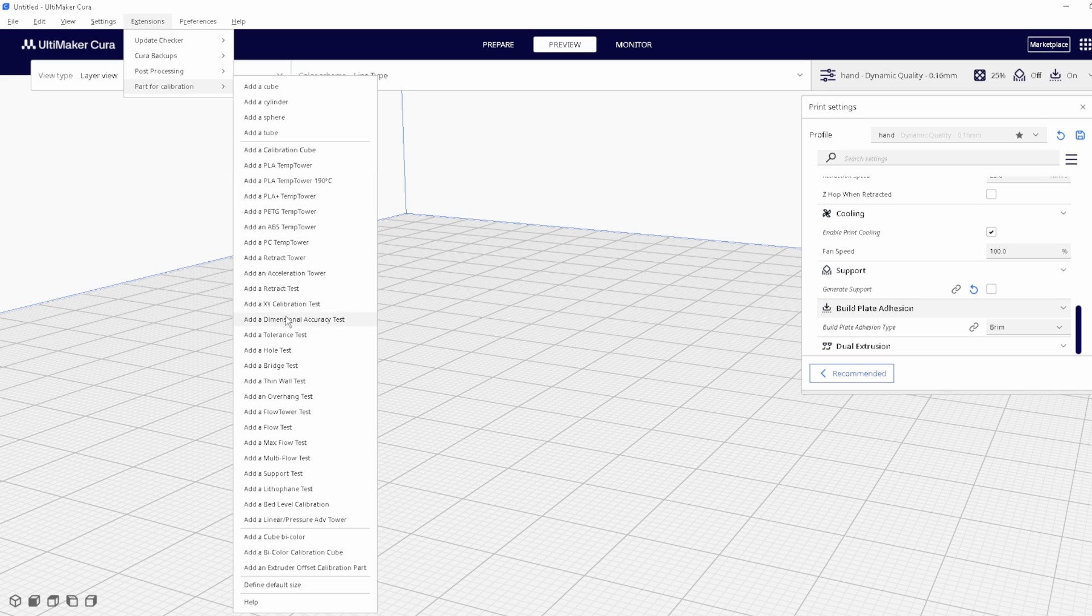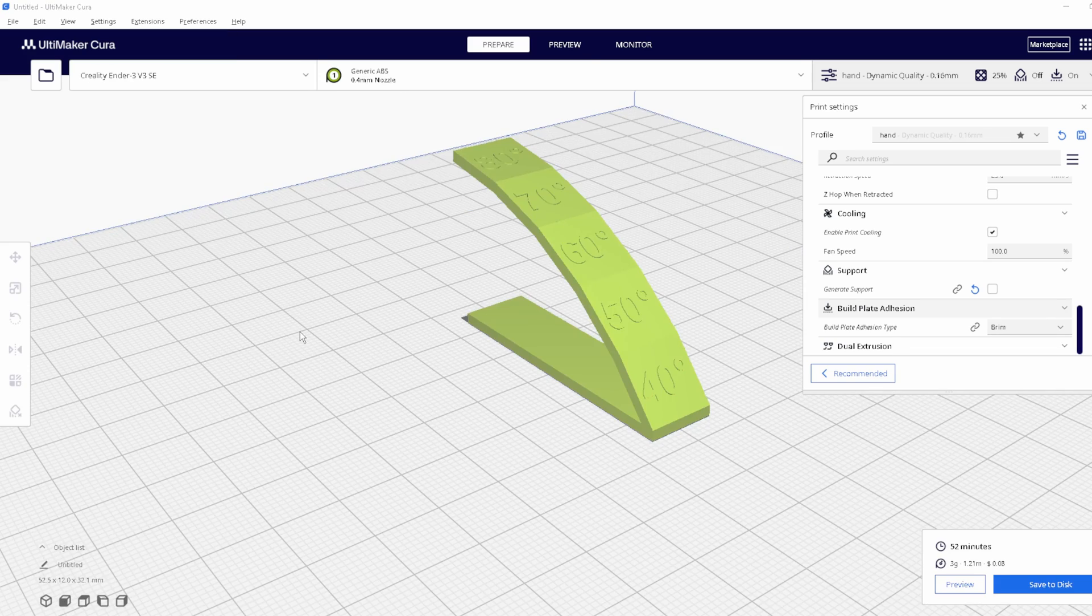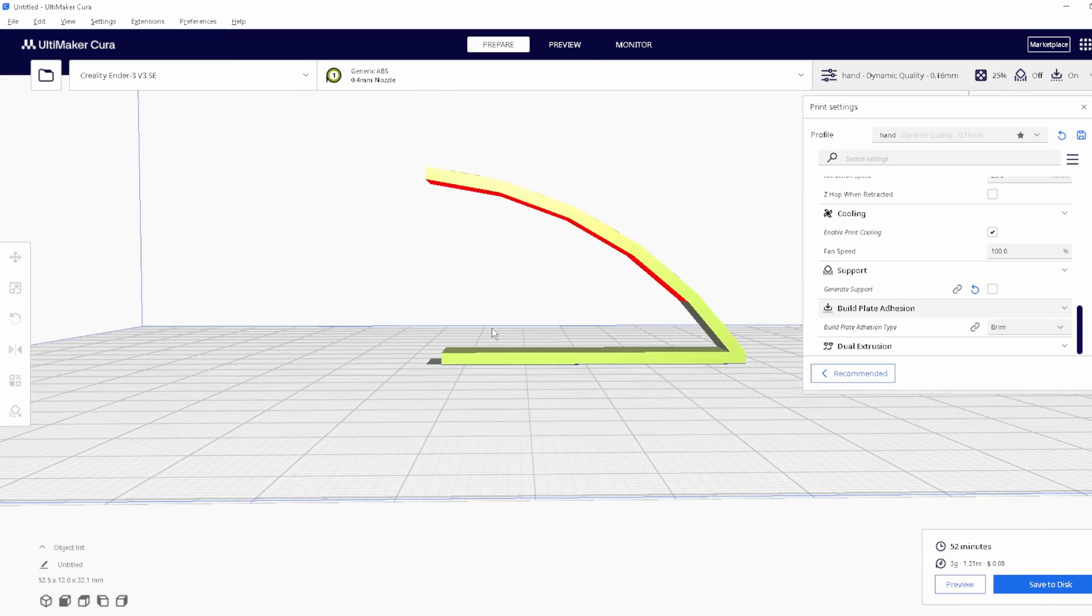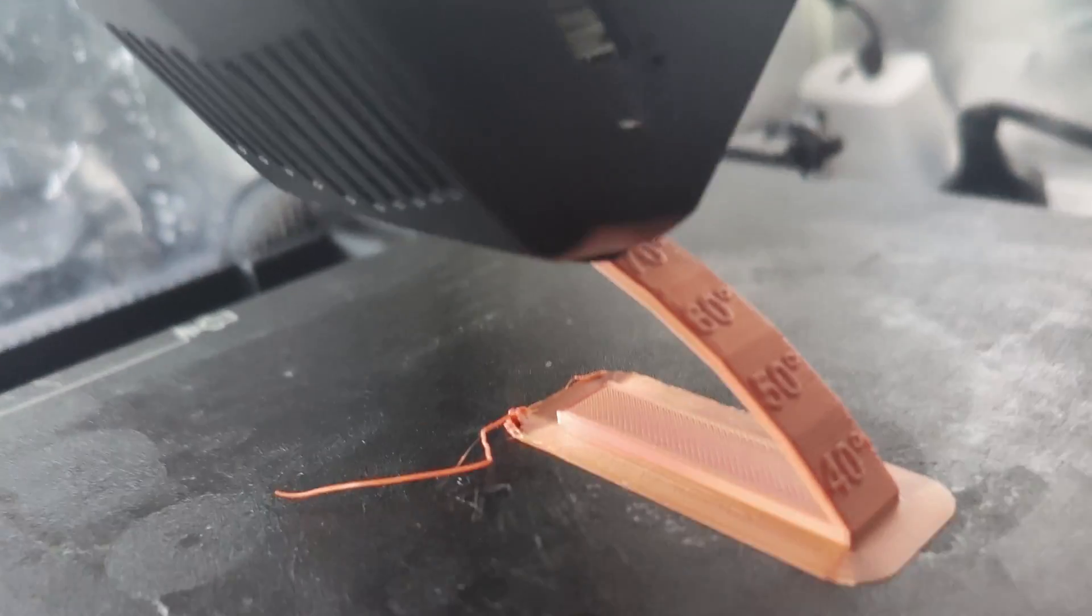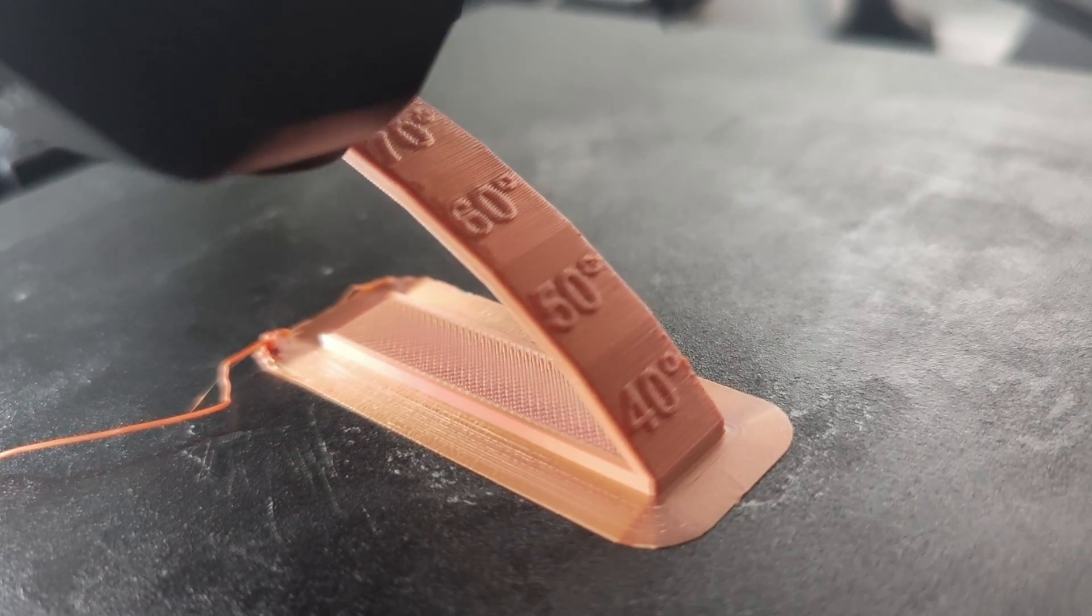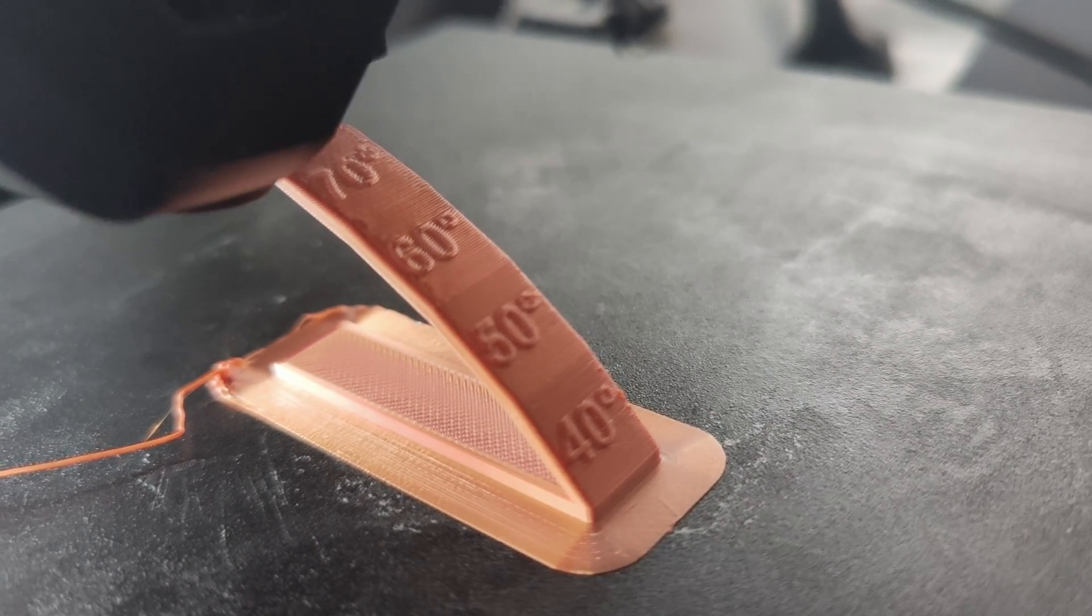Now before you start printing diagonally, it's always a good idea to do an overhang test to see how far you can push your printer before it will fail. Looks like I can probably push this to around 60 degrees with no problem, but to be on the safe side for the video I'll keep it at 45.